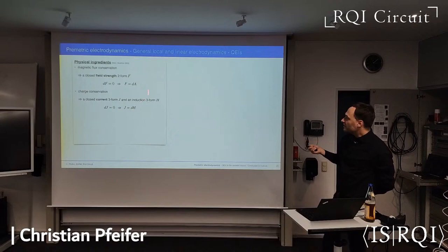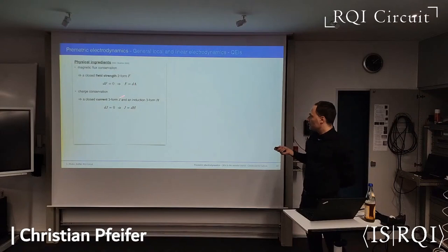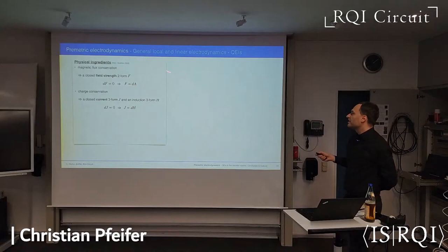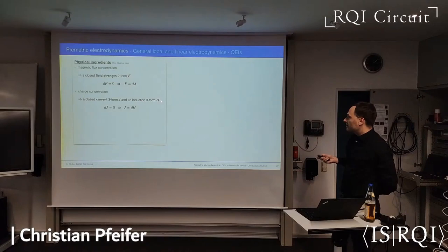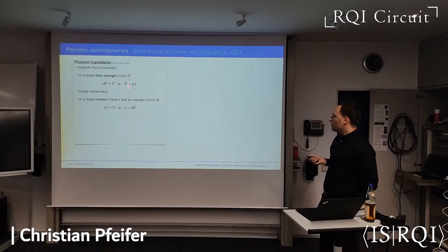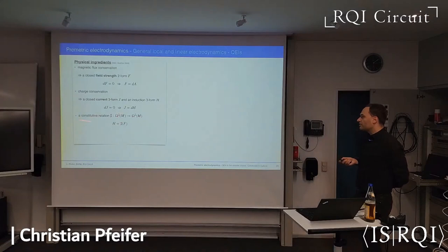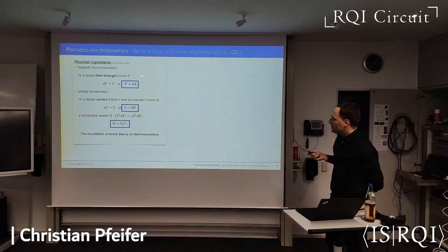This is enough to describe magnetic flux conservation and charge conservation — these are the two Maxwell equations. However, in four dimensions, the field strength F has six components and the induction tensor also has six components, giving twelve unknowns but only four equations. To make this a closed system, we need a so-called constitutive relation, which gives a relation between the induction form and the field strength. These are the fundamentals of every theory of electrodynamics.